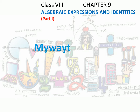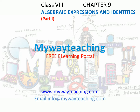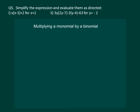Hello friends. This video is brought to you by MyWayTeaching.com. Let us consider one example. We have 3x multiplied by 5y plus 2. We can clearly see that 3x is a monomial and 5y plus 2 is a binomial.